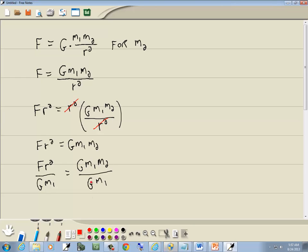And when you do that, these G's going to cancel, and these M sub 1 is going to cancel. And we get M sub 2 is equal to F R squared all over G M sub 1. And that's our answer.